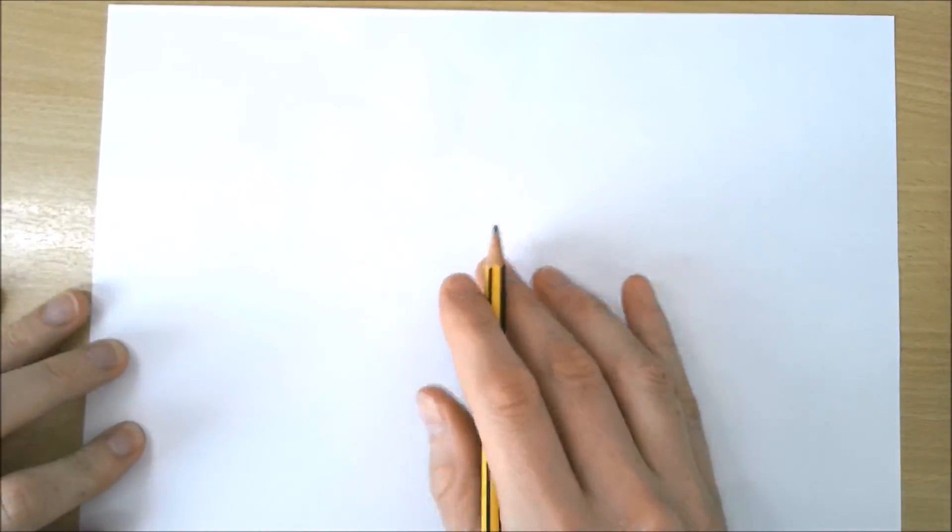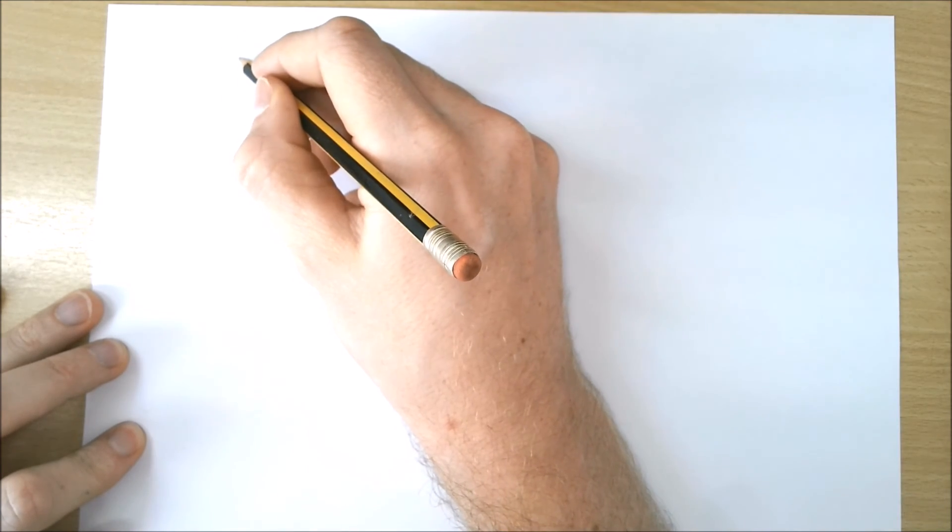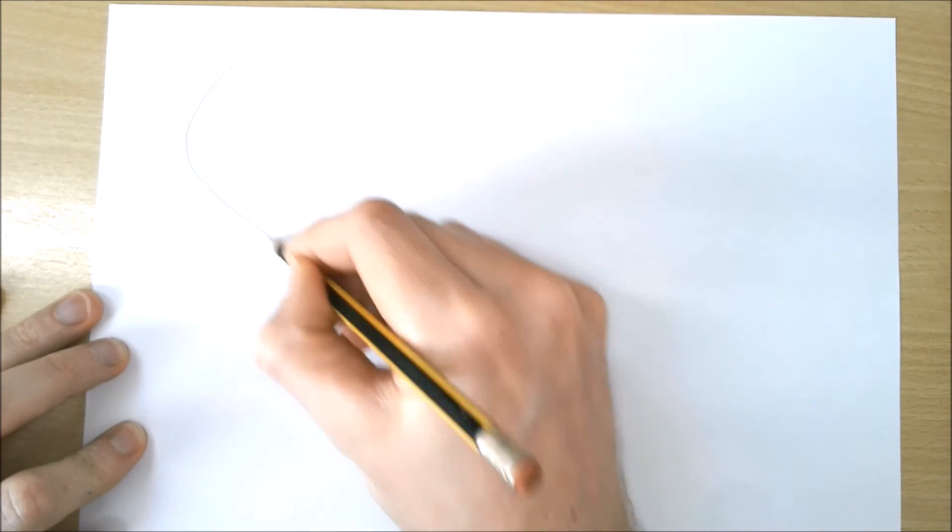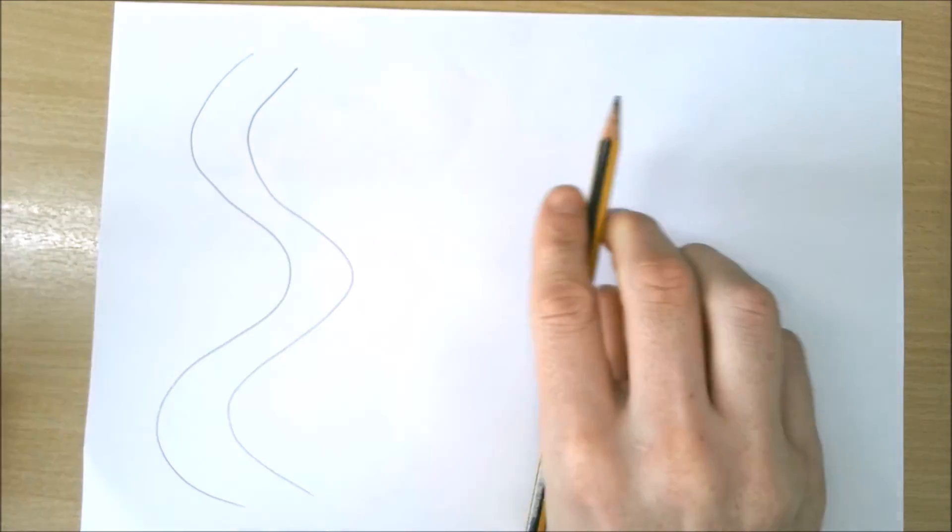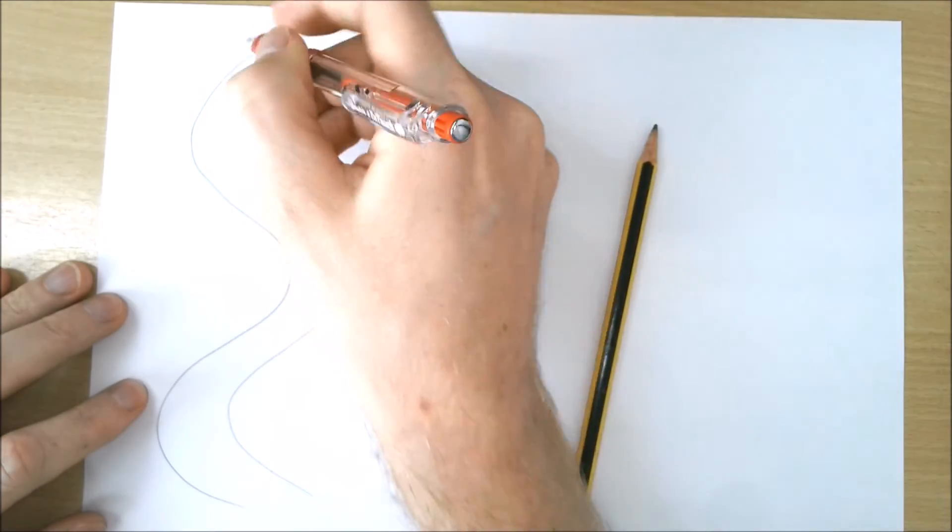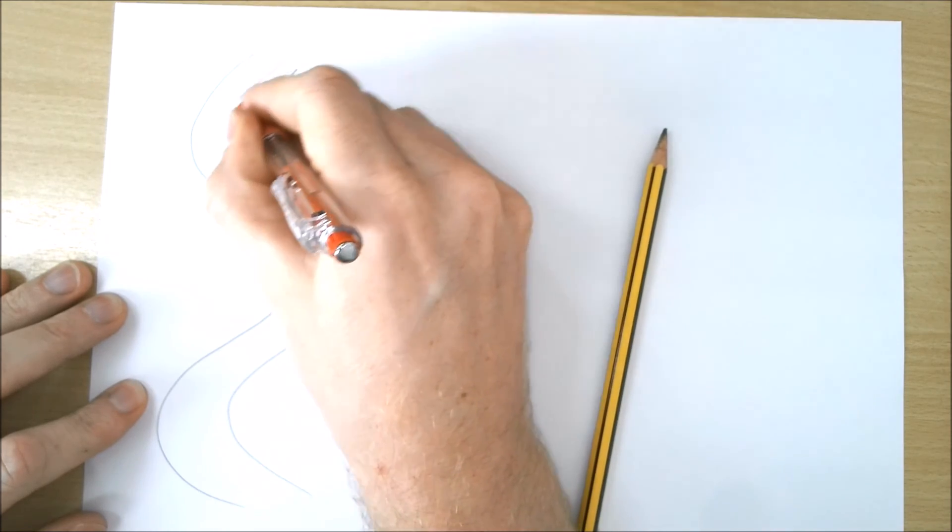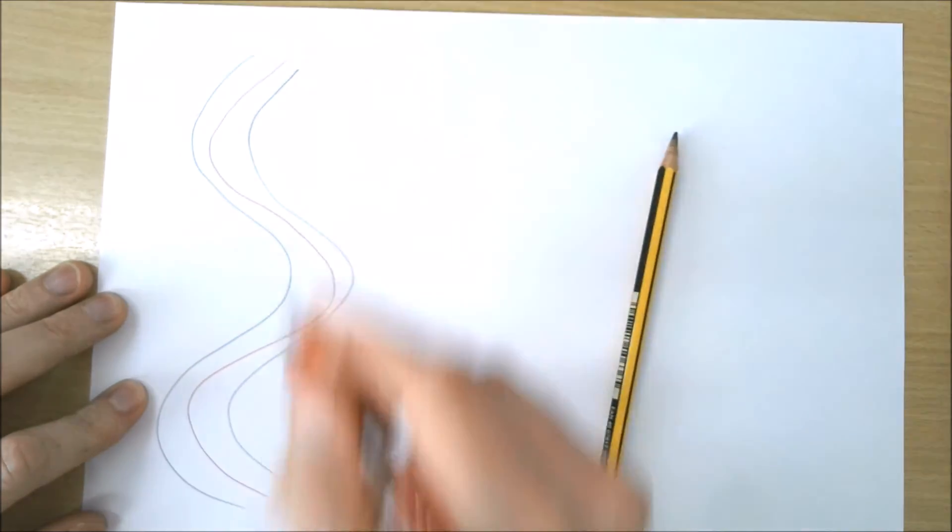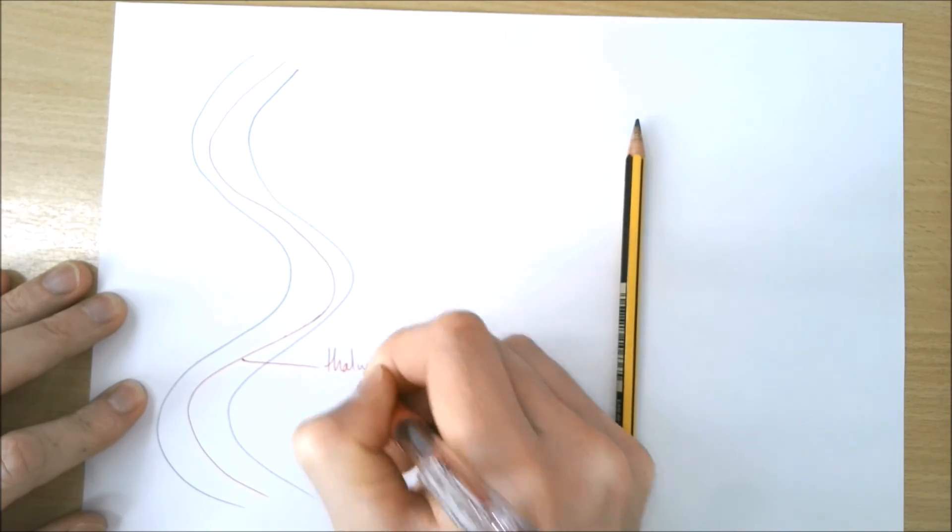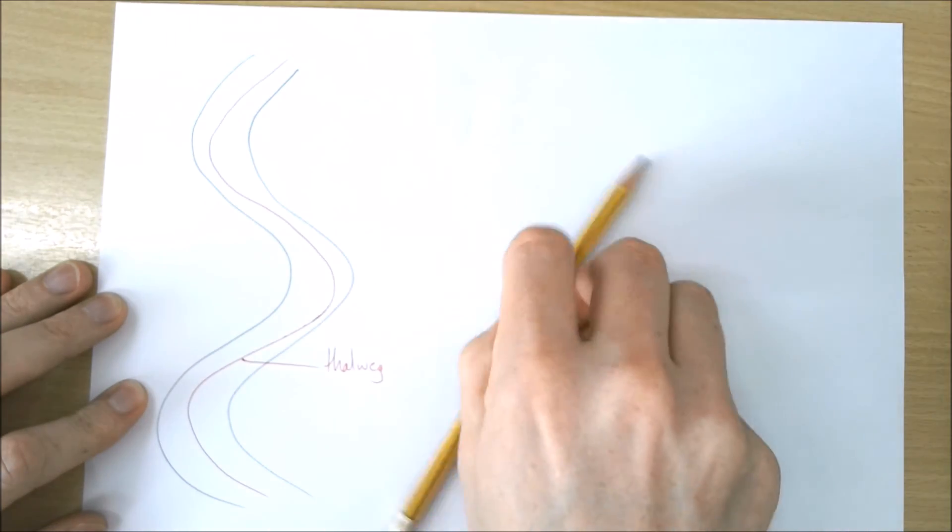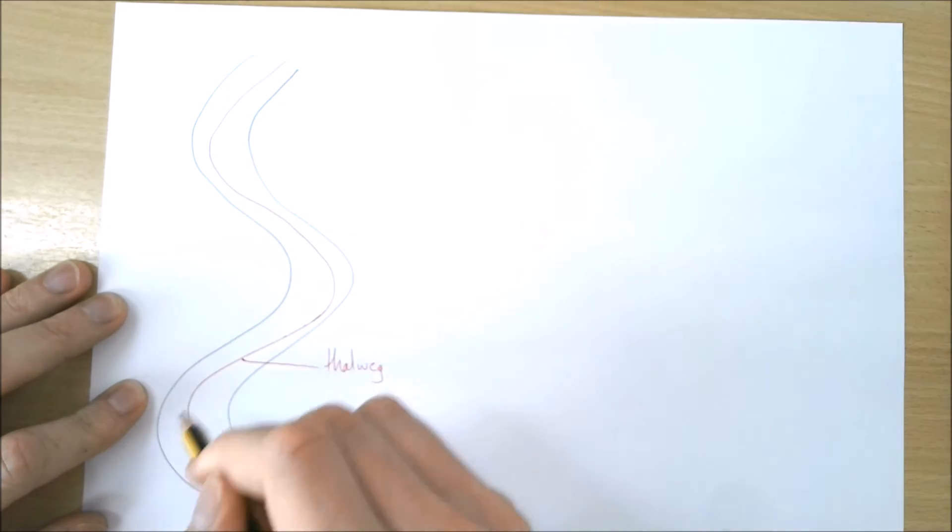How to draw a meander: firstly, we're going to draw a bird's-eye view, an aerial view of a meander. I'm going to add in the thalweg, which is particularly important for A-level. The thalweg is the fastest flow of water, the fastest line in terms of velocity.